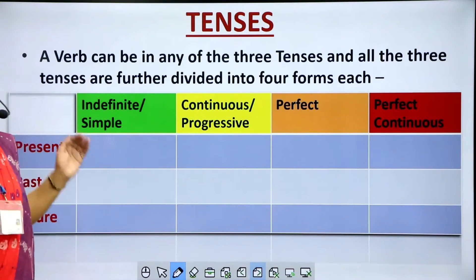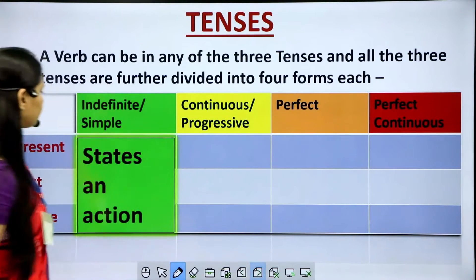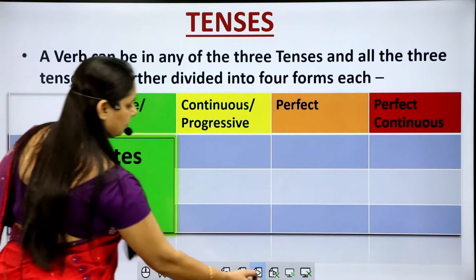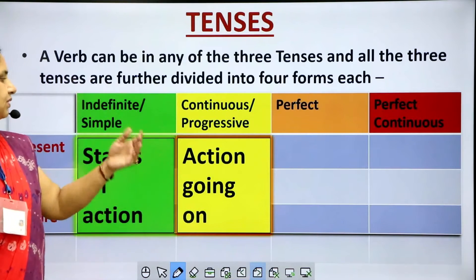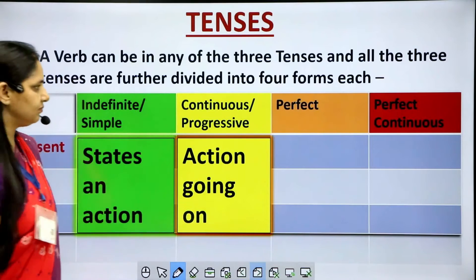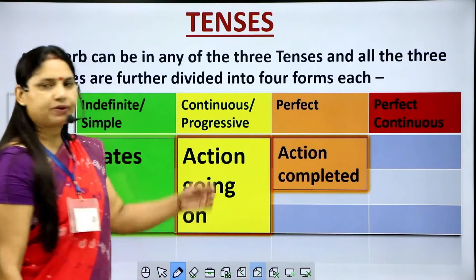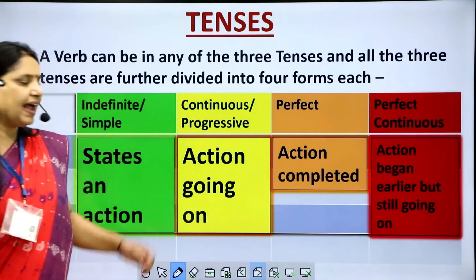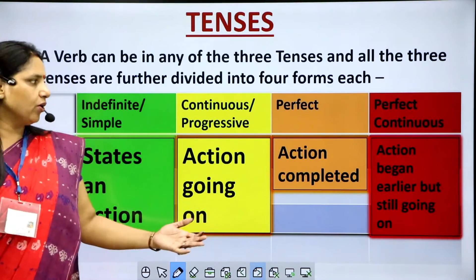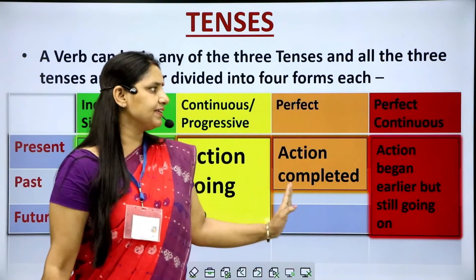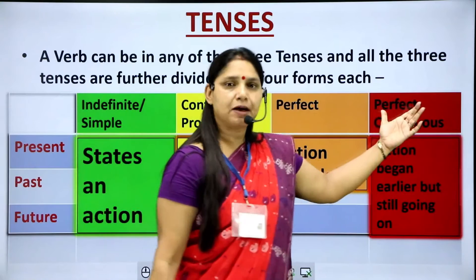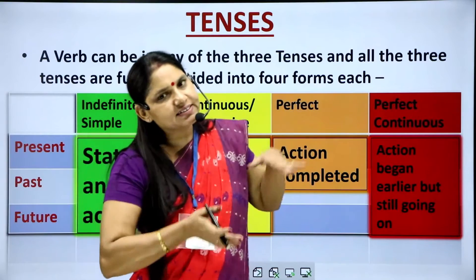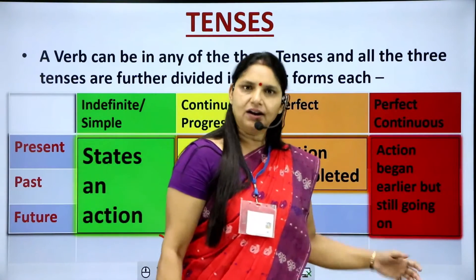Now let us see what these tenses denote. The indefinite or simple form just states an action. The continuous or progressive form shows that action is going on. The perfect form shows that action is completed. The perfect continuous form shows action began earlier but is still going on. 'Perfect' means complete, and 'continuous' means continuing — so some part of it is completed and it is still going on.